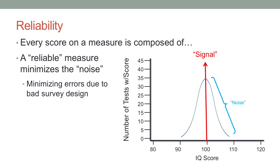One way to do that is to minimize error due to bad survey design — this was covered in our survey methods lecture. You want to make sure you're not using items that are overly complex, double-barreled, or using reverse-scored items in a way that someone might show a positivity bias, because that's just including more noise in our sample.